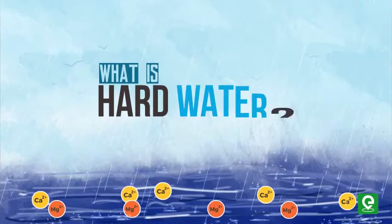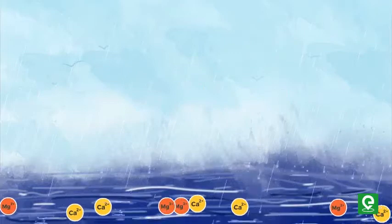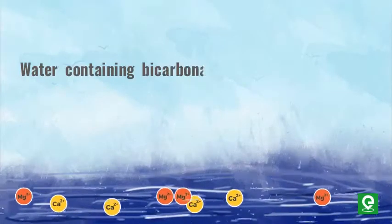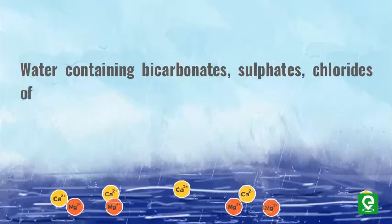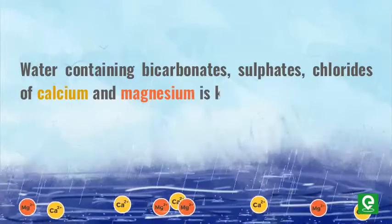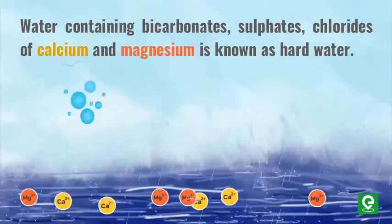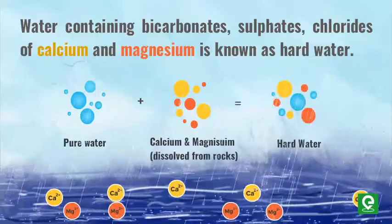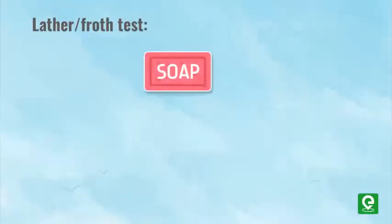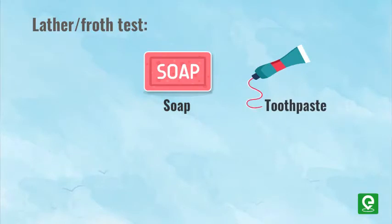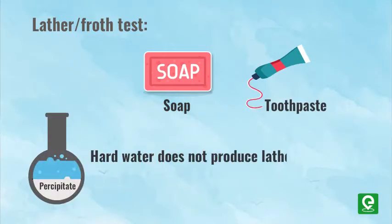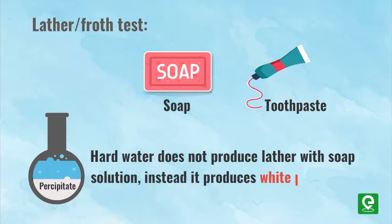What is hard water? Water containing bicarbonates, sulfates, or chlorides of calcium and magnesium is known as hard water. The simplest way to determine the hardness of water is the lather or froth test using soap or toothpaste. Hard water does not produce lather with soap solutions; instead, it produces a white precipitate called scum.